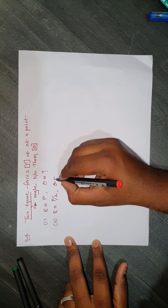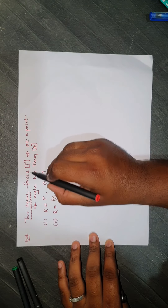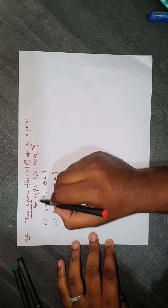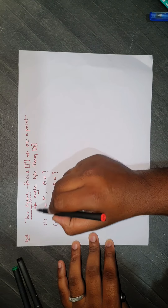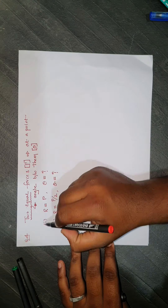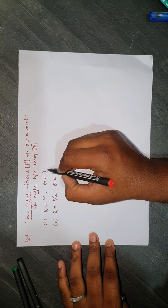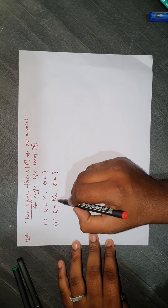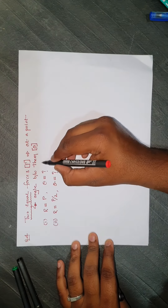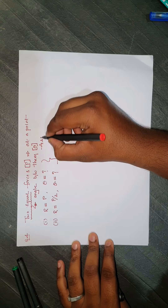The second condition: if the resultant is P/2, what is the angle between the two forces? To summarize: two equal forces of magnitude P act at a point. Find the angle theta between them when the resultant is P, and when the resultant is P/2.